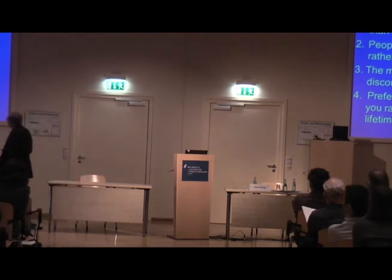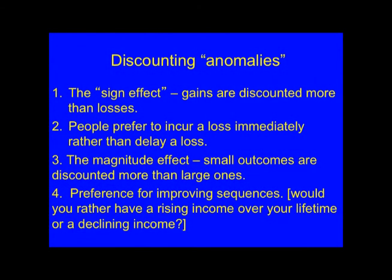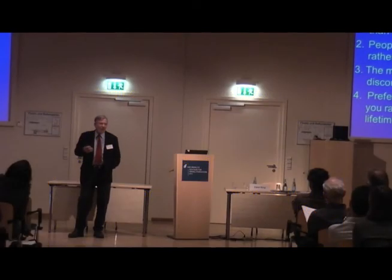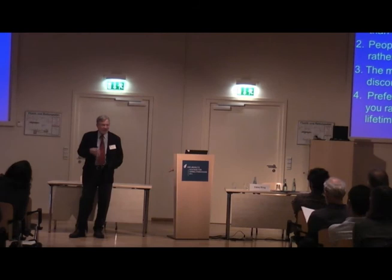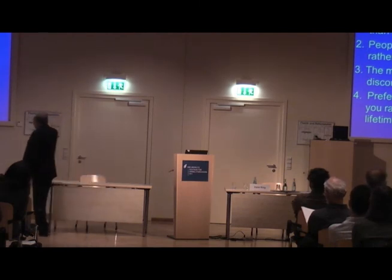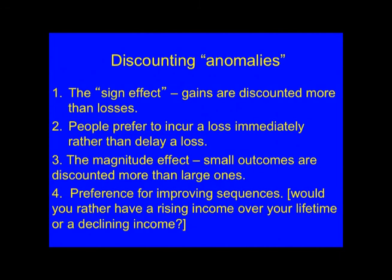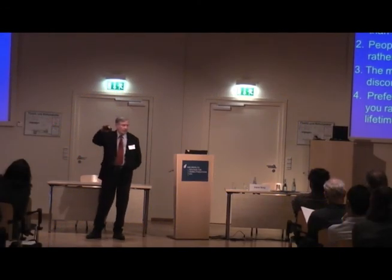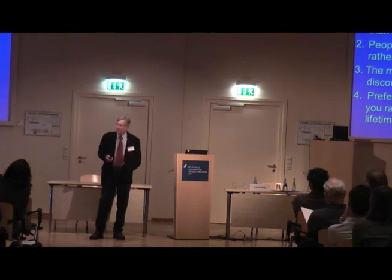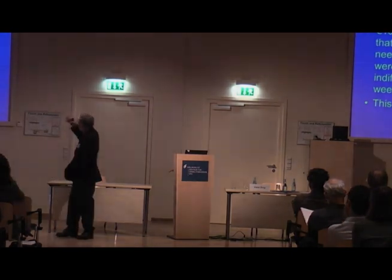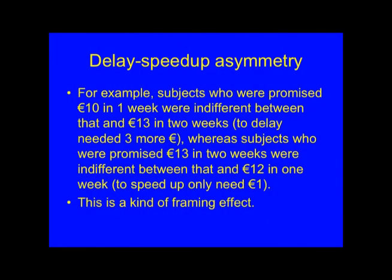Another thing: people prefer to incur a loss immediately rather than delay it. There's one experiment where subjects were going to receive an electric shock — would you rather have the shock now or six months from now? Most people take it now and get it over with, even though by discounting logic you should delay it. There's also the magnitude effect: small outcomes are discounted more than large ones. And there seems to be a preference for improved sequences — you'd rather have a rising income over your lifetime than a falling income, even if the discounted present value is larger for the falling income. Then there's a delay-speedup asymmetry.